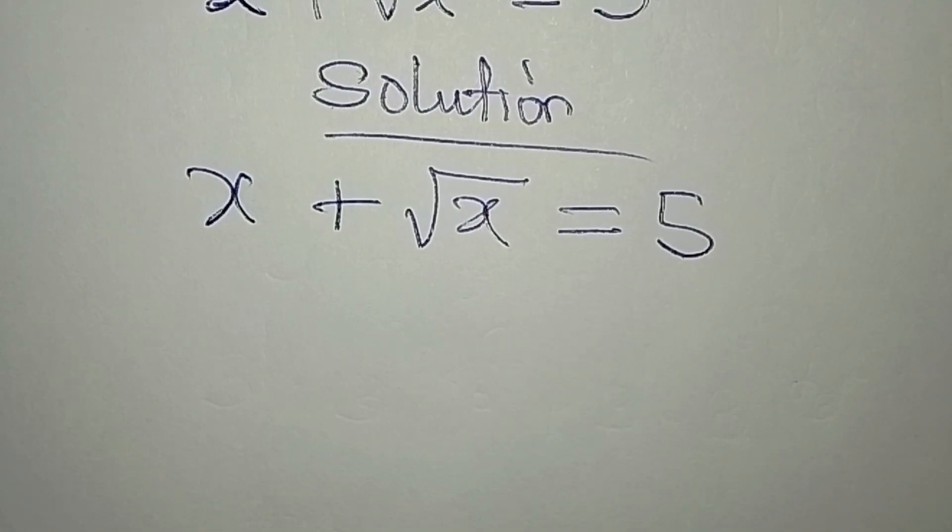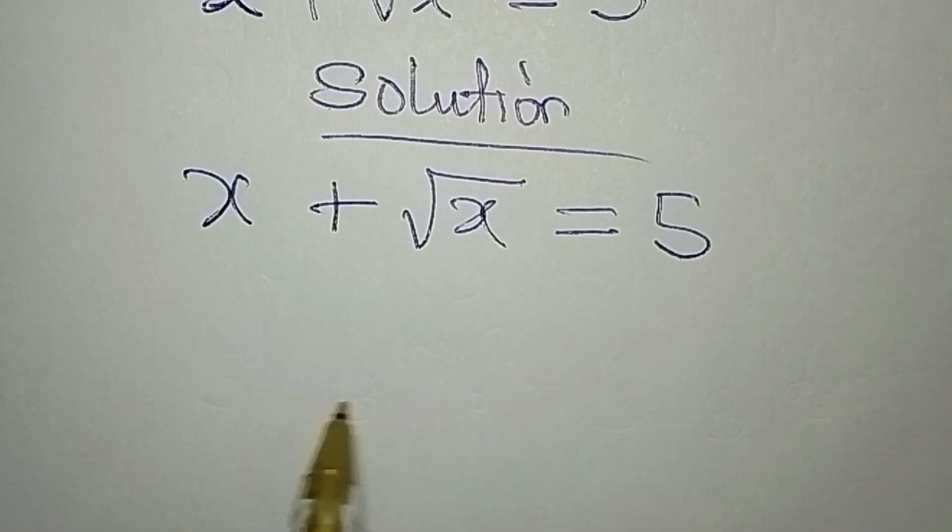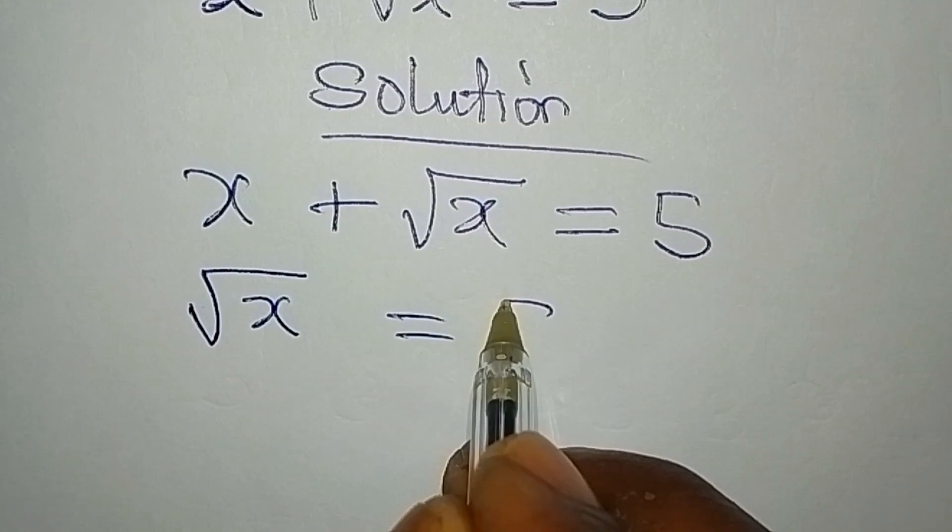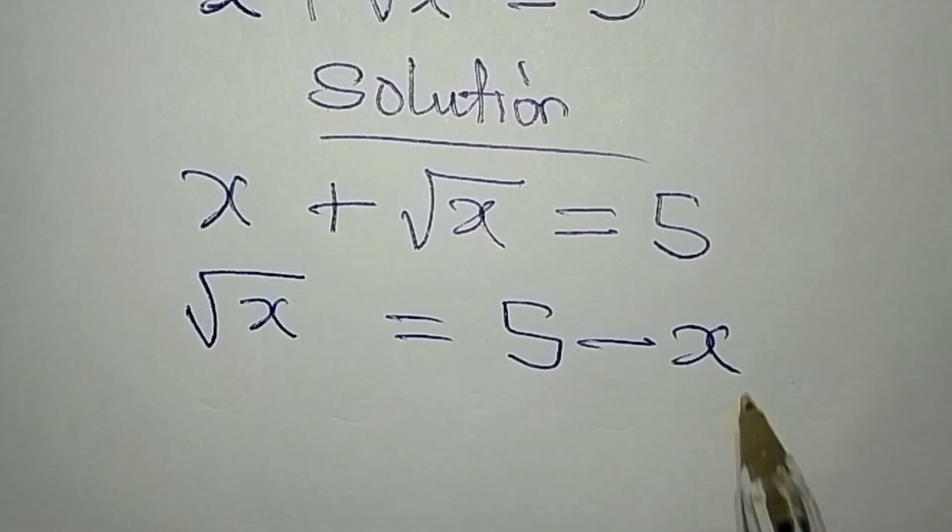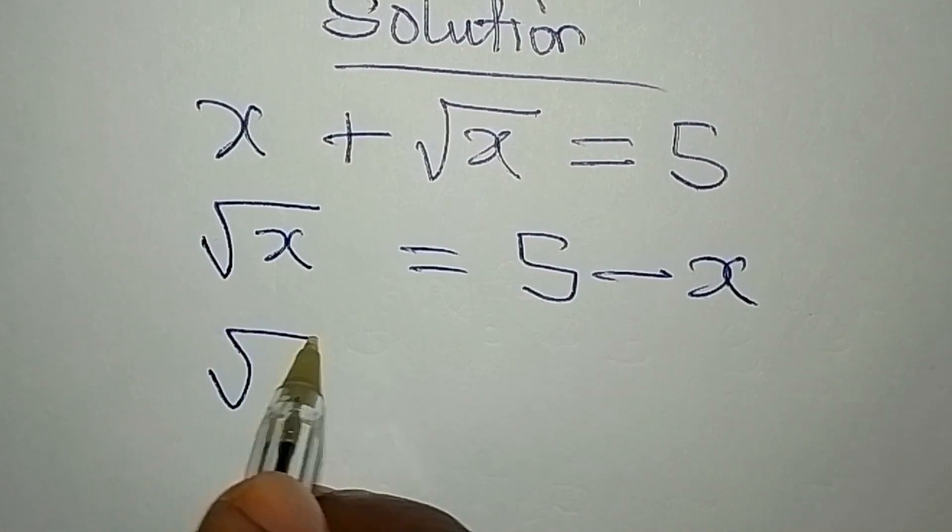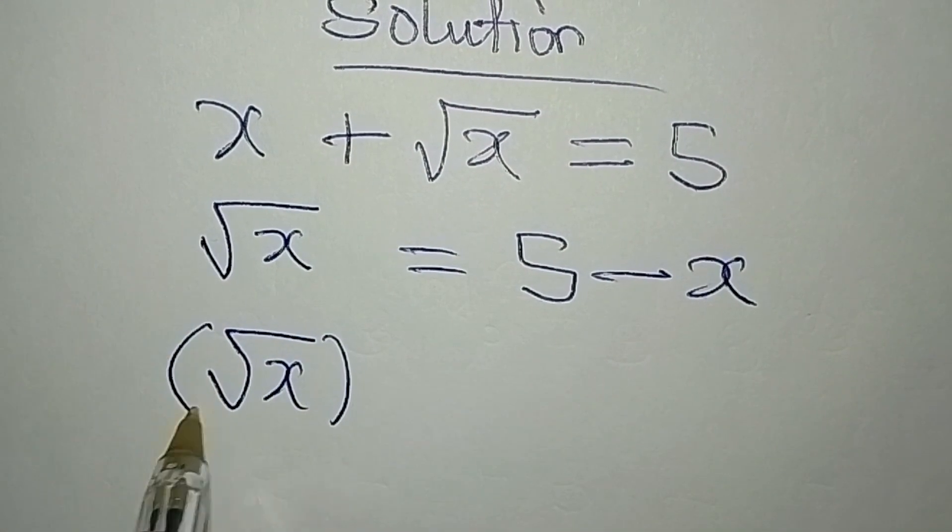But before then, let's make square root of x the subject. Square root of x is equal to 5 minus x. Now from here we can square both sides. This way the square root will be eliminated.